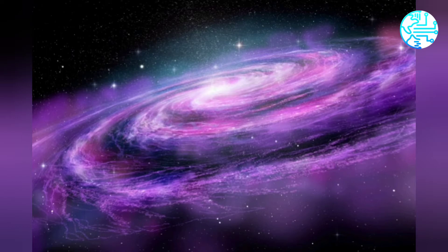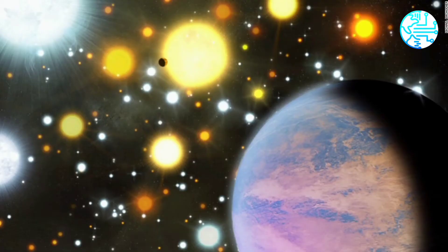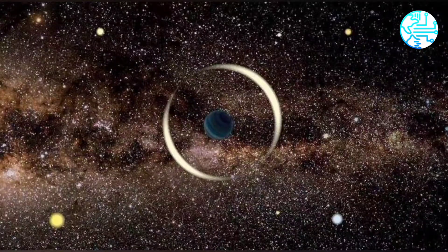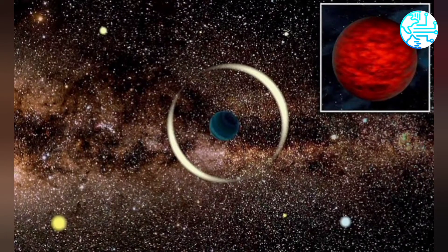Rogue planets are essentially not bound by any star and float freely in space. They are adrift in space after being ejected from their parent planet. Scientists claim this new rogue planet may be found to be somewhere in the middle of Milky Way.